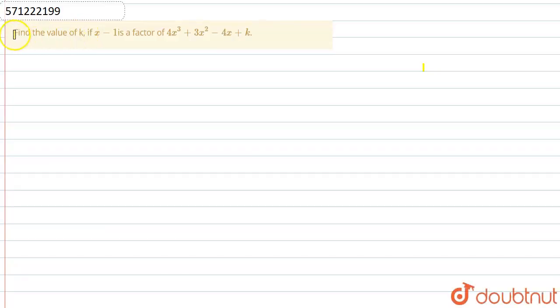Hello friends, the question is: find the value of k if x minus 1 is a factor of 4x cube plus 3x square minus 4x plus k.